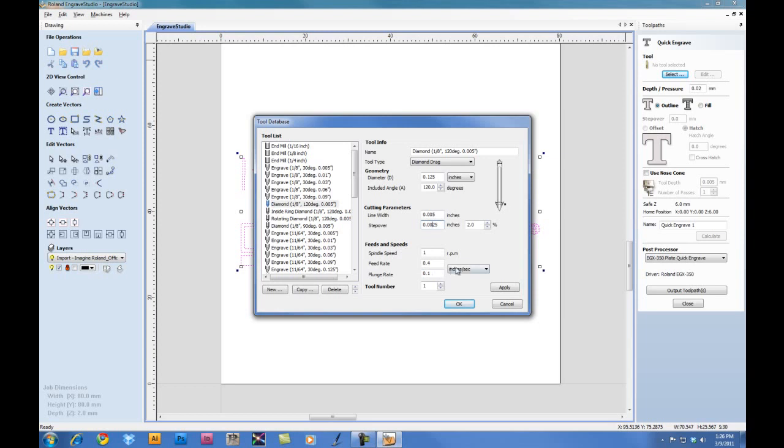Under the Feeds and Speeds, click the dropdown and select millimeters per second. Set the feed rate to between 40 and 50 millimeters per second. For the plunge rate, set this to the maximum value of 30. Click Apply and click OK.